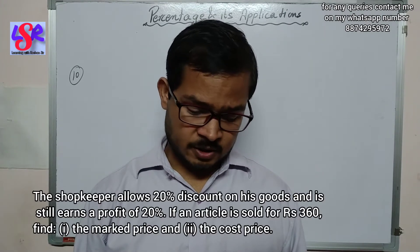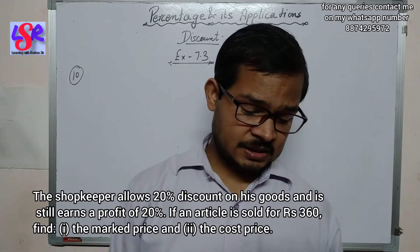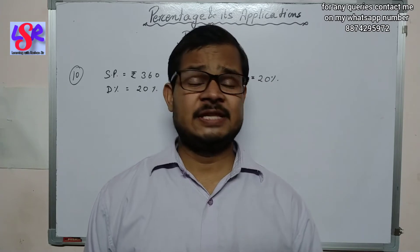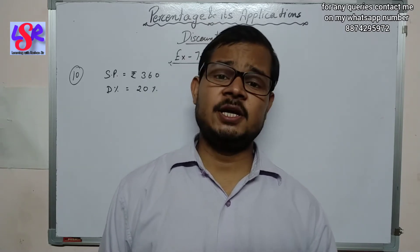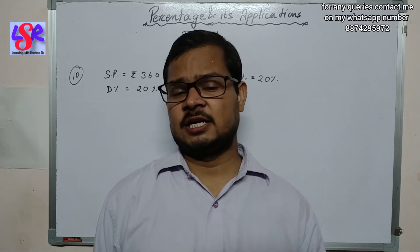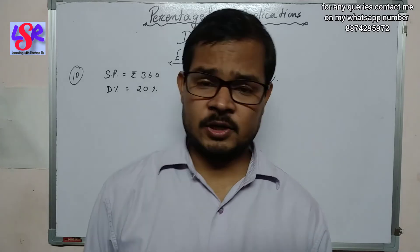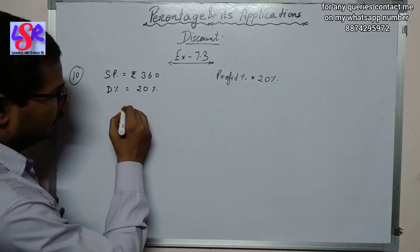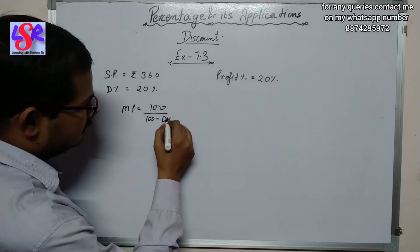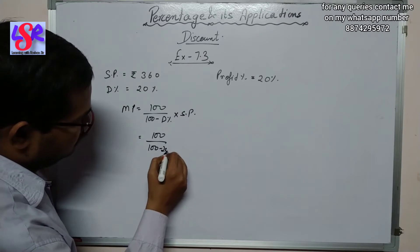Now let's see question number 10. A shopkeeper allows 20% discount on his goods and still earns a profit of 20%. If the article is sold for rupees 360, find the marked price and the cost price. We have the selling price, discount percent, and profit percent. Both the marked price and cost price can be calculated directly from the selling price.